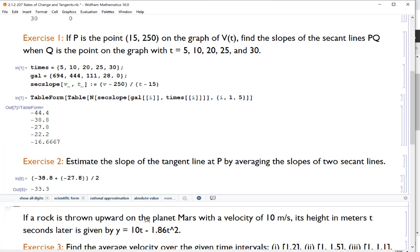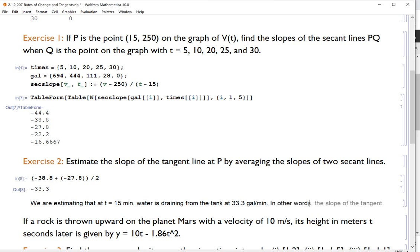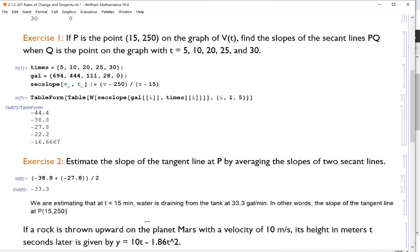So we are going to estimate then, I'm hitting alt seven to write in text. And I do recommend you write in text. We are estimating that the time equals 15 minutes water is draining from the tank at 33.3 gallons per minute. In other words, the slope of the tangent line at the point (15, 250) is M equals negative 33.3. Okay, I hope that makes sense. Now, again, we're having to make estimates because we don't have a lot to go with.